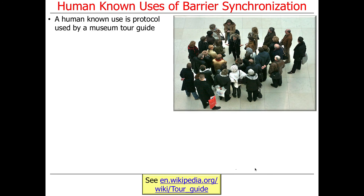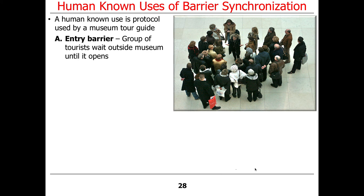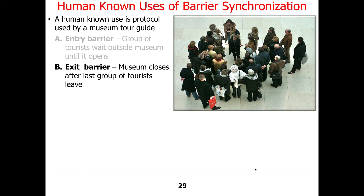A good human-known use of a barrier synchronizer is a museum tour guide. If you go to a museum for a guided tour, you might have an entry barrier: the tour starts at 10:15, so everybody waits outside until it's time or until everybody shows up. Once the tour guide confirms everyone in the group who paid is there, they all go in together — that's an entry barrier. There's also an exit barrier: you can't close the museum down until the last group of tourists leaves, ensuring everyone is done before closing things down.